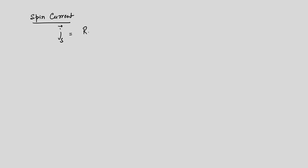The spin current is written as J_s equals the real part of psi(r,t) dagger times (v dot S) times psi(r,t). This is one way to understand that this term is invariant under time reversal, because both v and S change sign, so their product does not change sign — and that is how it is invariant under time reversal.